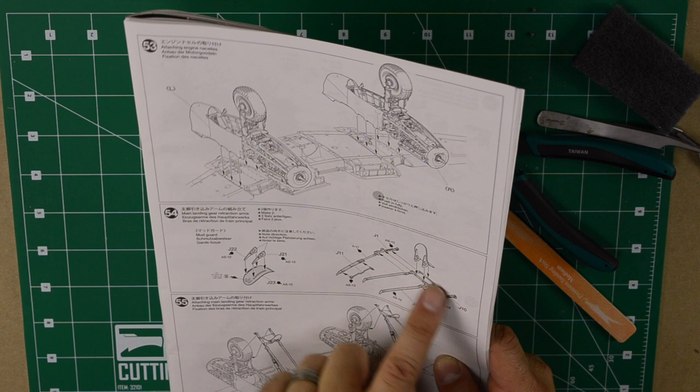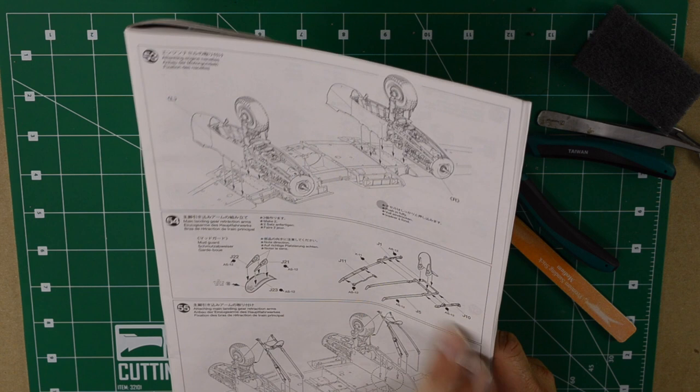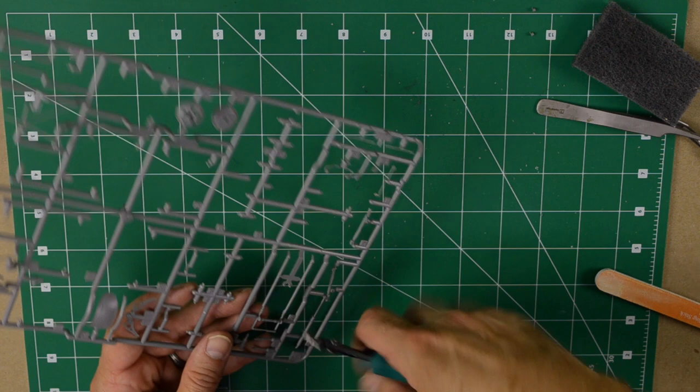We're going to assemble number 54, where the supporting arms or the retracting mechanism of the wheels are located. We have to make two sets of that too. Let's tackle that for now. And then the rest is just final assembly.